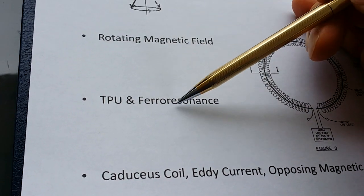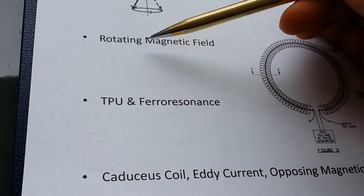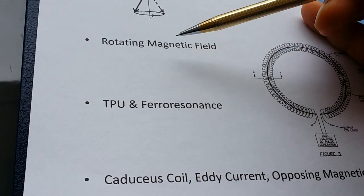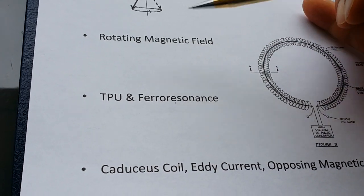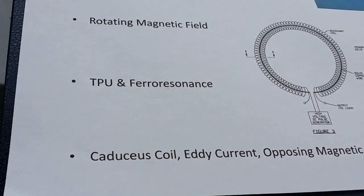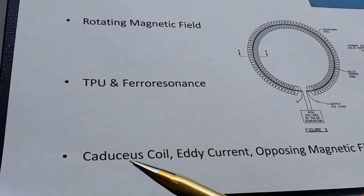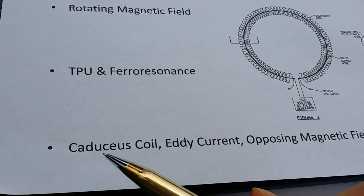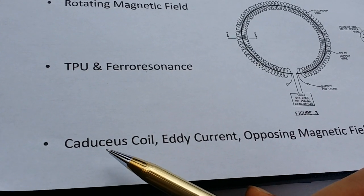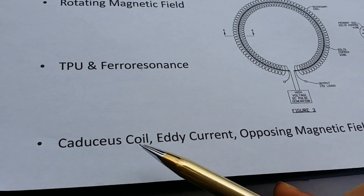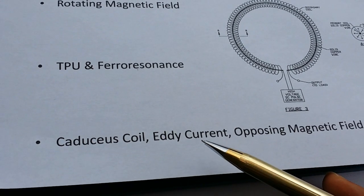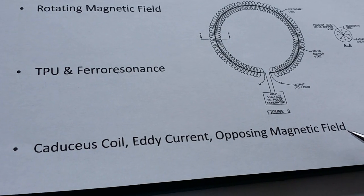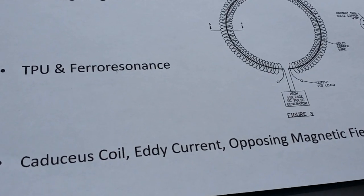Russian people like to mix rotating magnetic field and ferroresonants, although they are different. Free energy developers also like to talk about the Caduceus coil, eddy current, and opposing magnetic field.